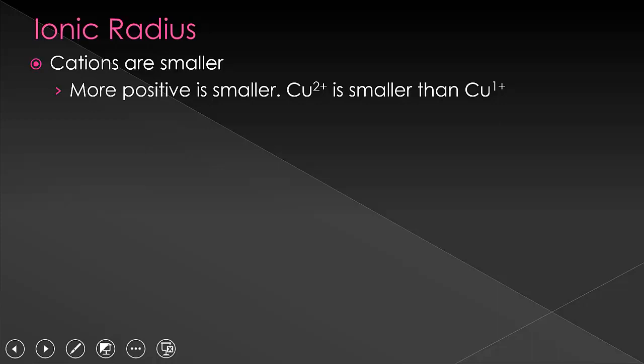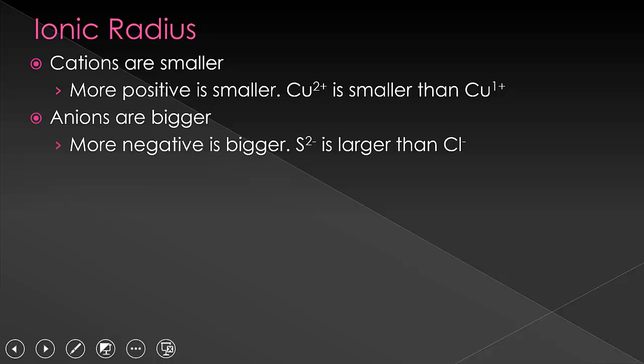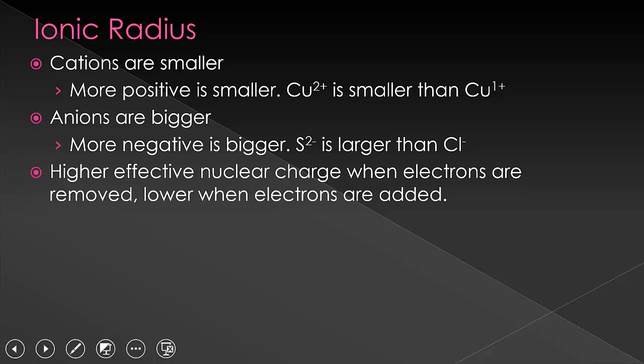The more positive, the smaller it is. Anions, on the other hand, are going to be larger than average because they are going to have extra electrons compared to the protons. The higher the negative charge, the larger the anion.